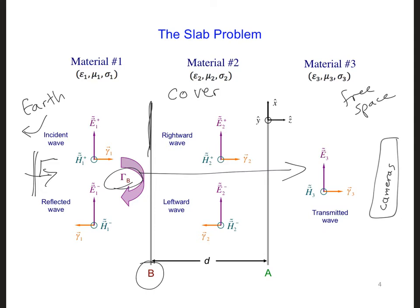We have an impedance mismatch at interface B, and another mismatch at interface A, because the material parameters are not going to be the same in all three regions. And each of these mismatches will generate reflections.